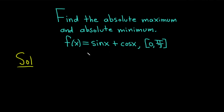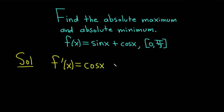The first step is to find the critical numbers of this function that lie between 0 and pi over 3. We'll start by taking the derivative. f prime of x equals cosine x minus sine x. Critical numbers are numbers in the domain of the function where the derivative is undefined or 0. This derivative is never undefined, so let's set it equal to 0.